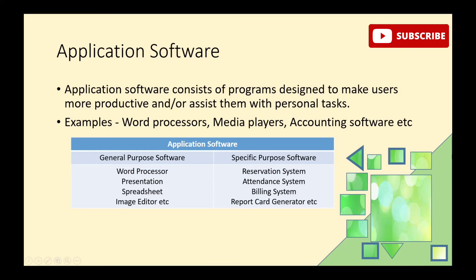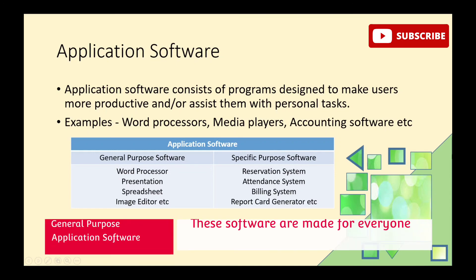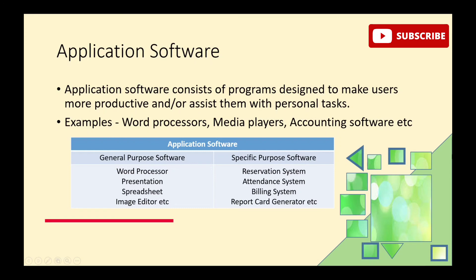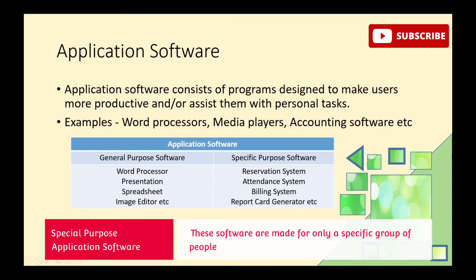Application software are programs designed to help the user perform personal tasks. Examples include word processors, media players, and accounting software. Application software is of two types: first, general purpose software, which supports a wide range of activities; and second, specific purpose software, which is used for a specific task.